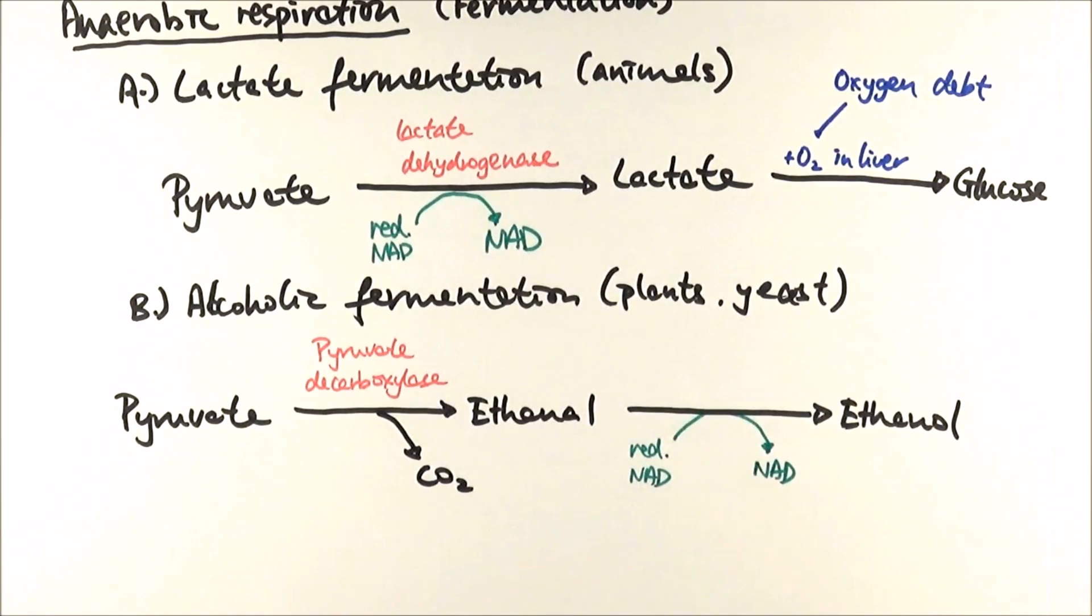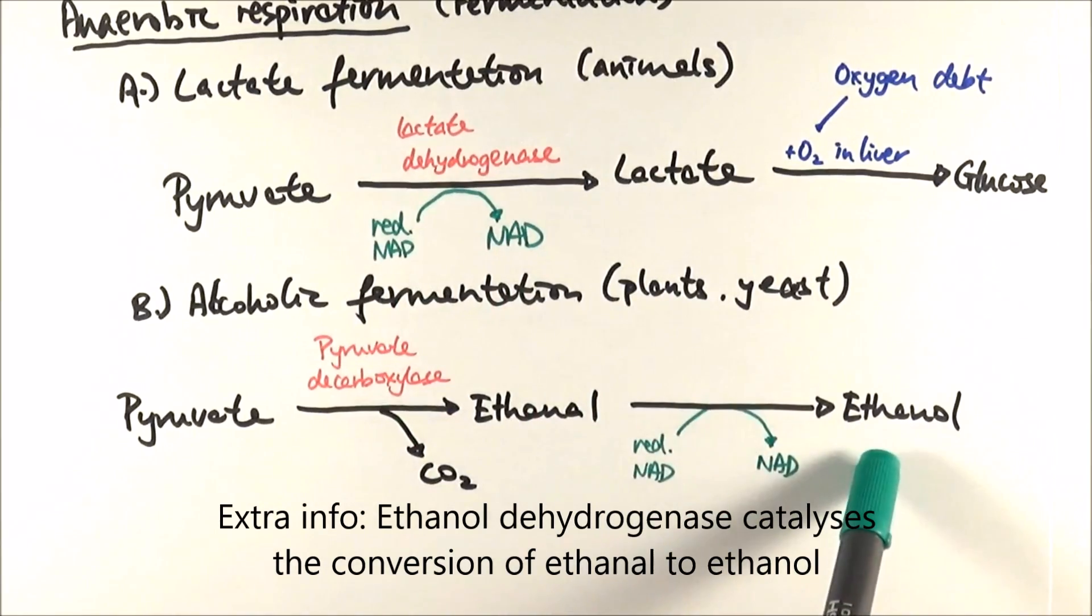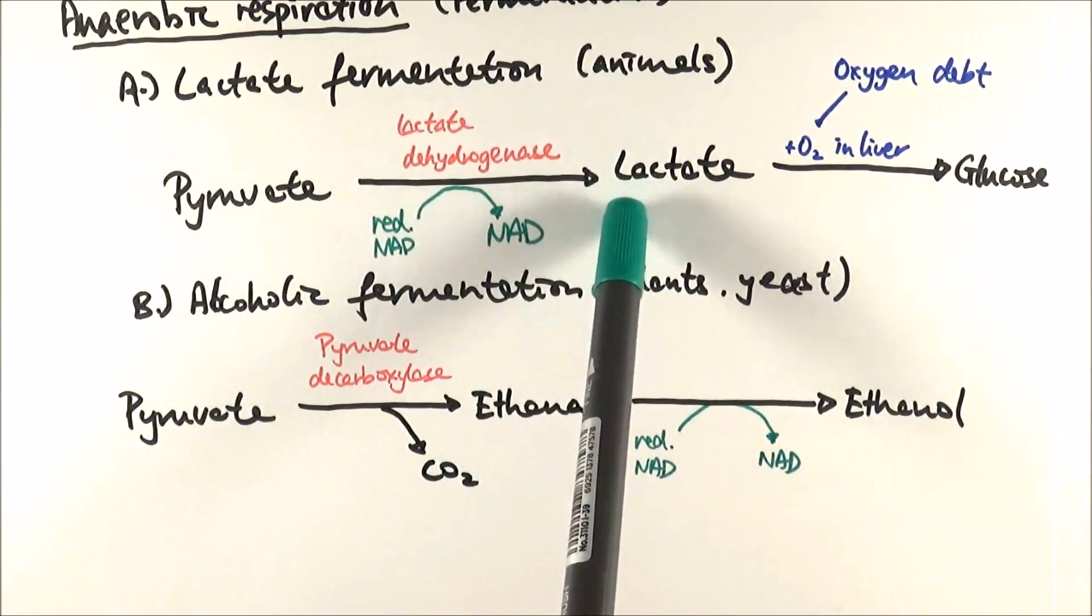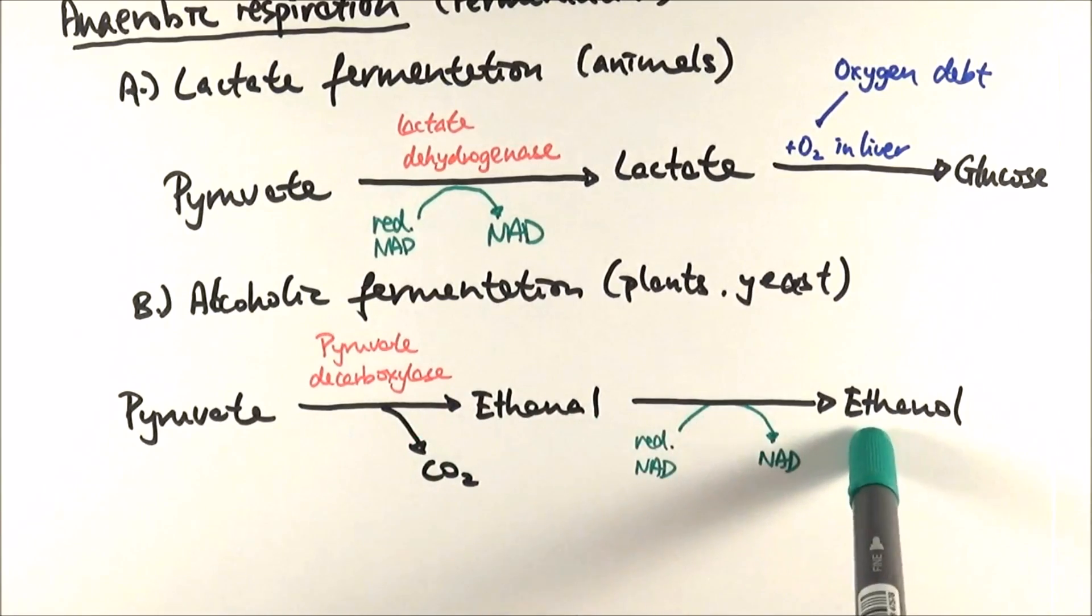A bit of extra information, there is an enzyme that works here. Again, it's not in the specification, but it's actually very similarly named by the same principle anyways, which is called ethanol dehydrogenase. Unlike lactate fermentation, which is reversible, alcoholic fermentation is irreversible. Once you've gone through this process, it's just ethanol, and that's it. You can't change it to anything else.